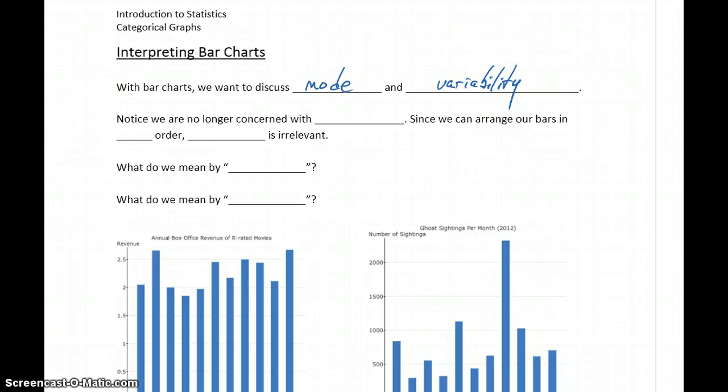Both of these concepts are in some ways similar to some of the characteristics we talked about with histograms. So mode is similar to the idea of center, and variability is similar to the idea of spread. There will be some differences, but you can keep those ideas in mind.